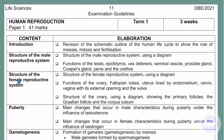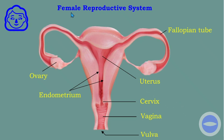Another thing the examiner wants us to know is the structure of the female reproductive system. We must know the structure using a diagram and the functions of the ovary, fallopian tubes, uterus lined by the endometrium, cervix, vagina with its external opening, and the vulva. We must know the purpose of each part.